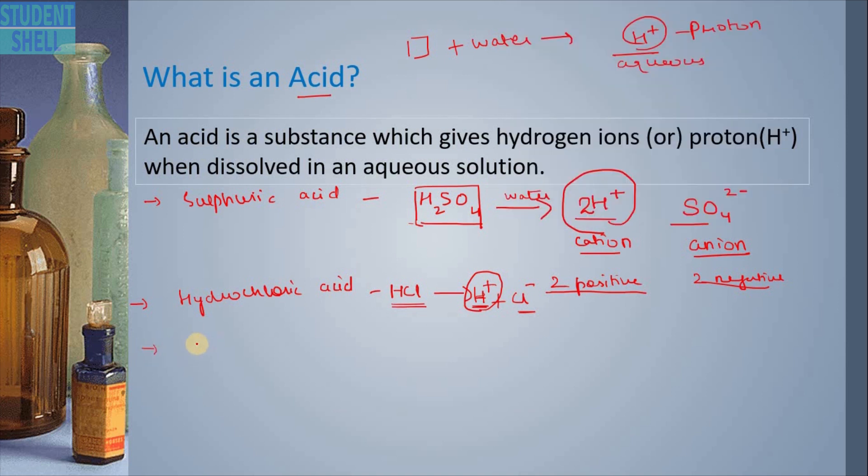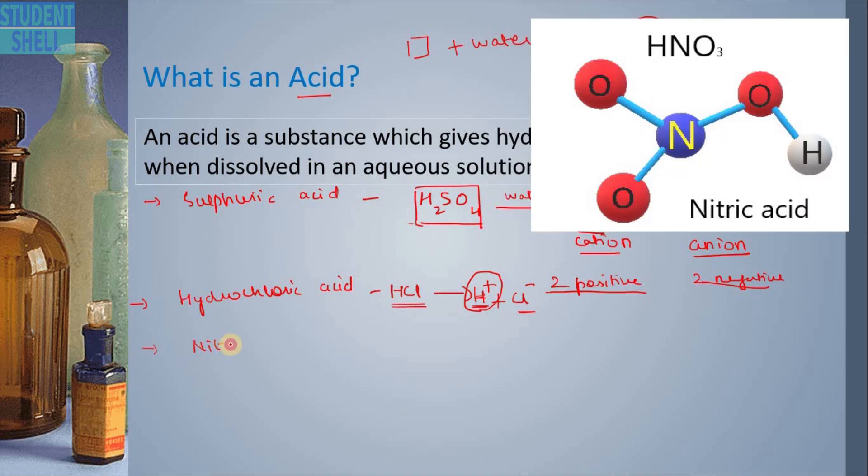Next I am taking another very important one, that is nitric acid. These are the acids that you can find in your laboratory. These are very common. The formula is HNO3. In its aqueous state it breaks into 2 kinds of ions, that is NO3- and H+. Now again I saw this and I called it an acid.